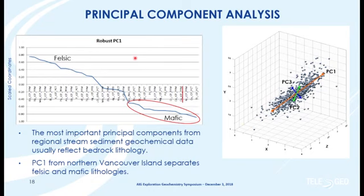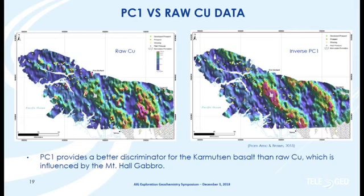Looking at PC1 from northern Vancouver Island: in positive space there is the felsic response; in negative space we have a mafic response, and as part of that mafic response we have copper — so we want to filter that out. Here's a plot of raw copper — the stippled area is the Karmutzen basalt. Now I've inverted the PC1 — it had negative loadings — so it comes up as hot colors on the gridded percentile map. You can see we get a really good match for the Karmutzen, so now we have a geochemical fingerprint of the unit that's interfering with our copper signal.